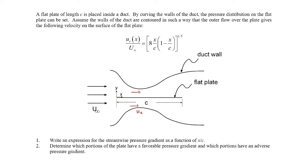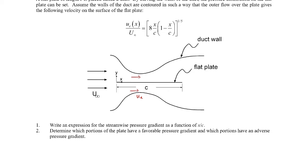c is the length of the plate, so the outer flow has some sort of complex profile as a function of x. We're asked to find the expression for the streamwise pressure gradient as a function of x over c — that is, how the pressure is changing as we move in the x direction. The second part is to determine which portions of the plate have a favorable pressure gradient and which portions have an adverse pressure gradient.